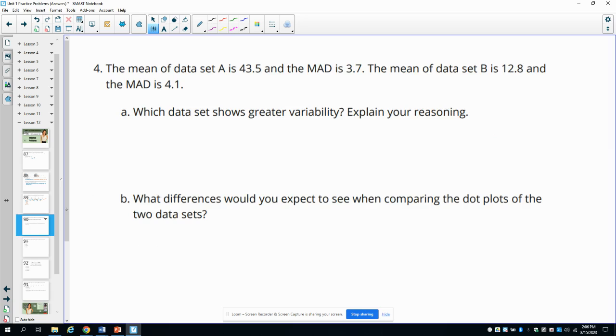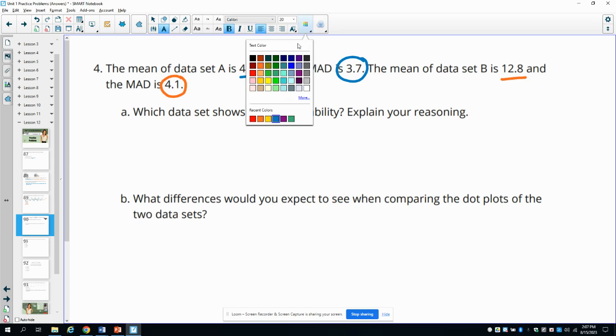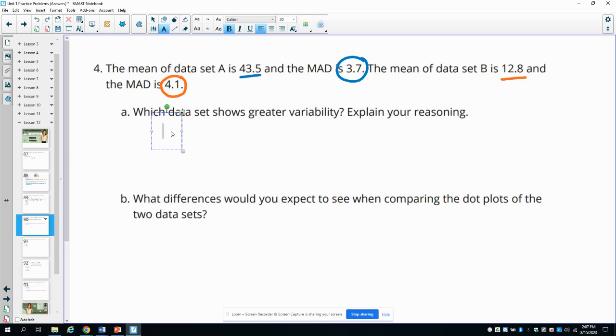Number four, the mean of data set A is 43.5 and has a mean absolute deviation of 3.7. The mean for data set B is 12.8 and has a mean absolute deviation of 4.1. So which data set shows greater variability here? Well, variability is in the MAD or it's shown with that mean absolute deviation. And so whichever one of those is larger, that's the data set that's got greater variability. So in this case, it's set B because the MAD is larger than the one in set A.